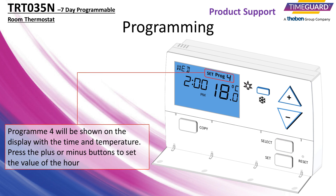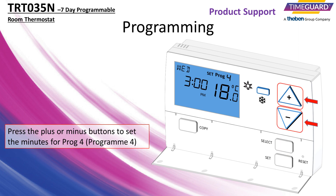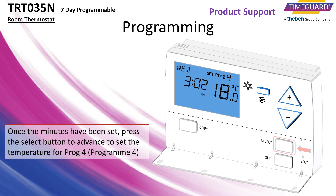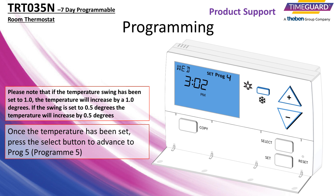Program 4 will be shown on the display with the time and temperature. Press the plus or minus buttons to set the value of the hour. Once the hour has been set, press the select button to advance to setting the minutes. Press the plus or minus buttons to set the minutes. Once the minutes have been set, press the select button to advance to set the temperature for program 4. The temperature will be blinking. Press the plus or minus buttons to amend the value of the temperature. Once the temperature has been set, press the select button to advance to program 5.